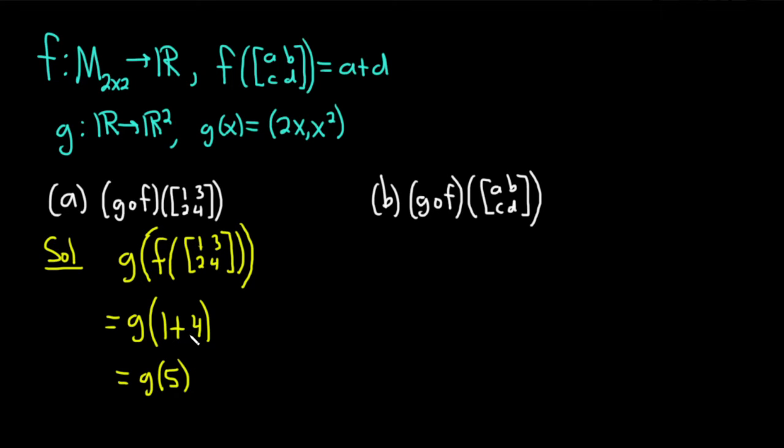And now we can look at g. g takes x and sends it to this ordered pair here. This will be 2 times x, so 2 times 5, comma, and then 5 squared. So this is equal to (10, 25). And so that takes care of part a.